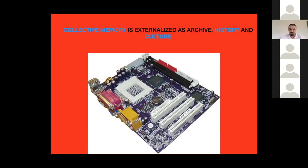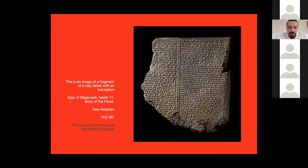This is an image of a fragment of a clay tablet with an inscription, which is the Epic of Gilgamesh of the Neo-Assyrian period, 7th century before Christ. This is external memory as recorded knowledge — I hope you can see the relation to the previous image.